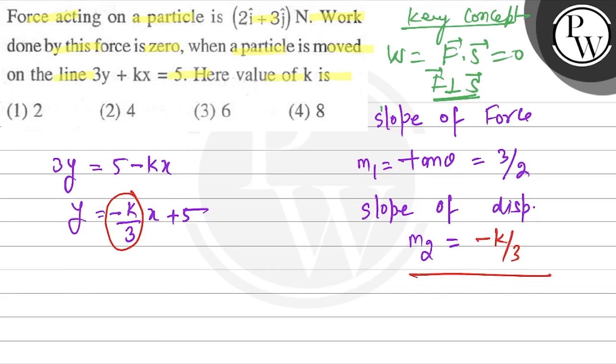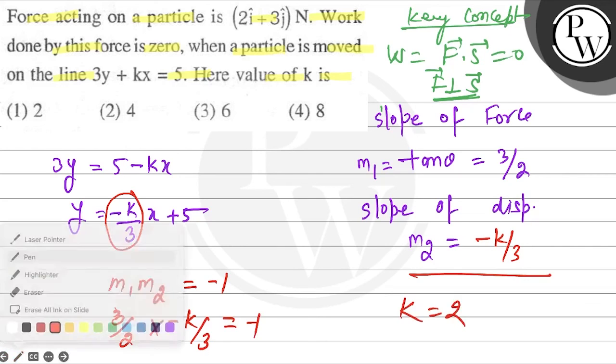Now the two slopes would be perpendicular, m1*m2 must equal -1. So it is 3/2 times -k/3, and that should equal -1. That will give you k equal to 2. So final answer of the question is 2, and I hope you understood it. Best of luck.